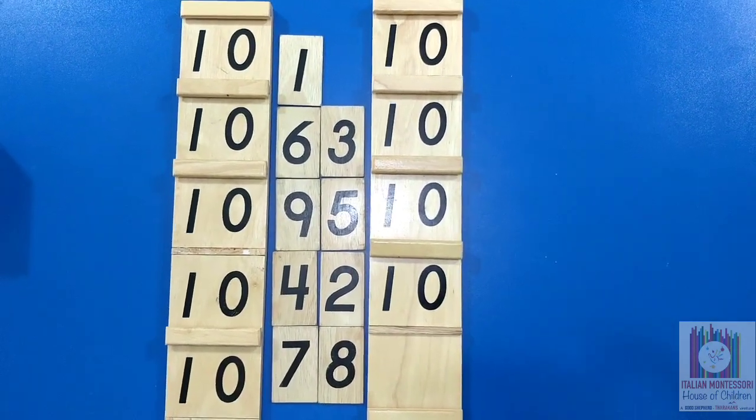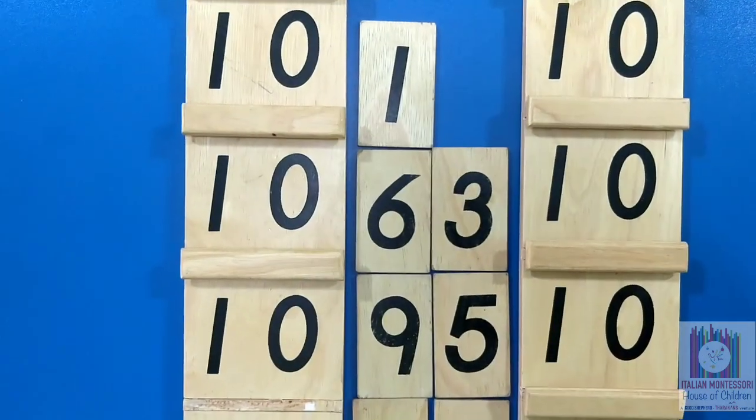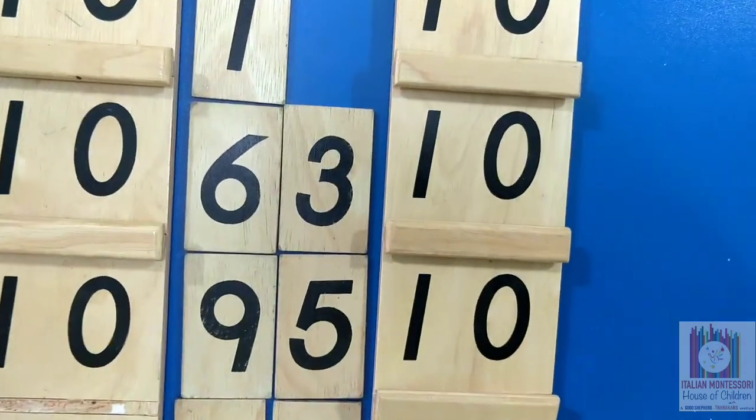The boards have the numeral 10 printed 9 times in a row. On separate cards are printed the numbers 1 to 9.